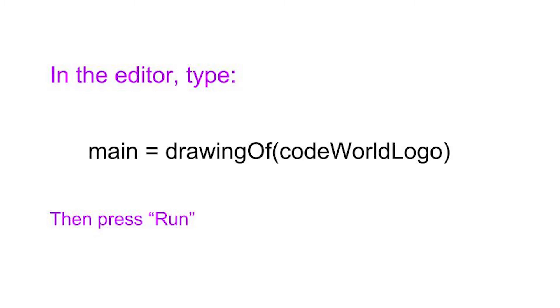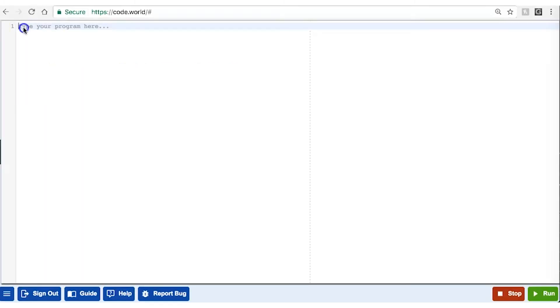In the editor, write main equals, drawing of, parenthesis, code world logo, parenthesis, and hit run. When you're coding, keep in mind that computer programming is very picky. Your program will not work if you leave out a parenthesis, or misspell a word, or capitalize the wrong letters. So pay attention to exactly what you're typing. For the most part, spacing doesn't affect your program, but you might notice that we don't put spaces between words, and that the subsequent word is capitalized instead. This is called camel case because of the humps sticking up throughout your code.